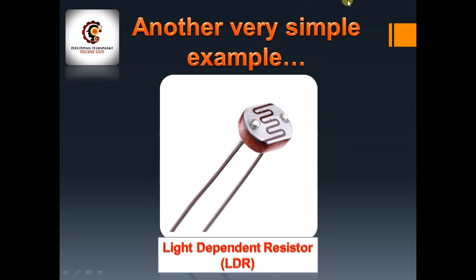When the light falling on the LDR is more than expected, the resistance becomes very low. The relationship is inversely proportional: more light on the LDR surface means less resistance, and vice versa. You can connect this LDR in a voltage divider circuit. It is a very simple example of a sensor — a device whose resistance varies with the intensity of light. More light means less resistance; less light means more resistance of the LDR.